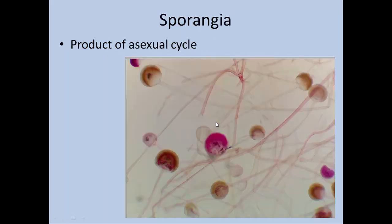The asexual structures we just looked at are called sporangia. These are multiple sporangia, and you can see on this one there's a stalk that holds it up. These are the hyphae that those sporangia grow from.